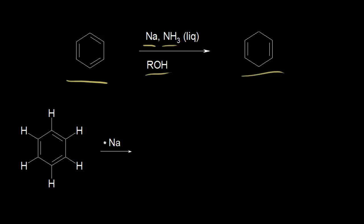Let's look at the mechanism for the Birch reduction. Sodium is in group one of the periodic table, so it has one valence electron, which I'll color magenta. The start of the mechanism is for sodium to donate its one valence electron to the benzene ring. We show the movement of that one electron with a fish hook arrow, or half-headed arrow, moving over to this carbon.